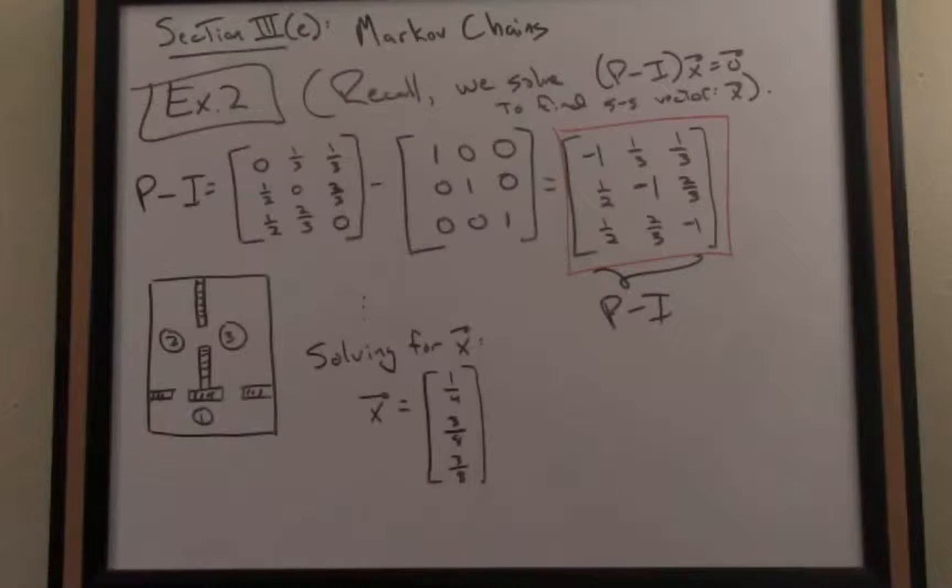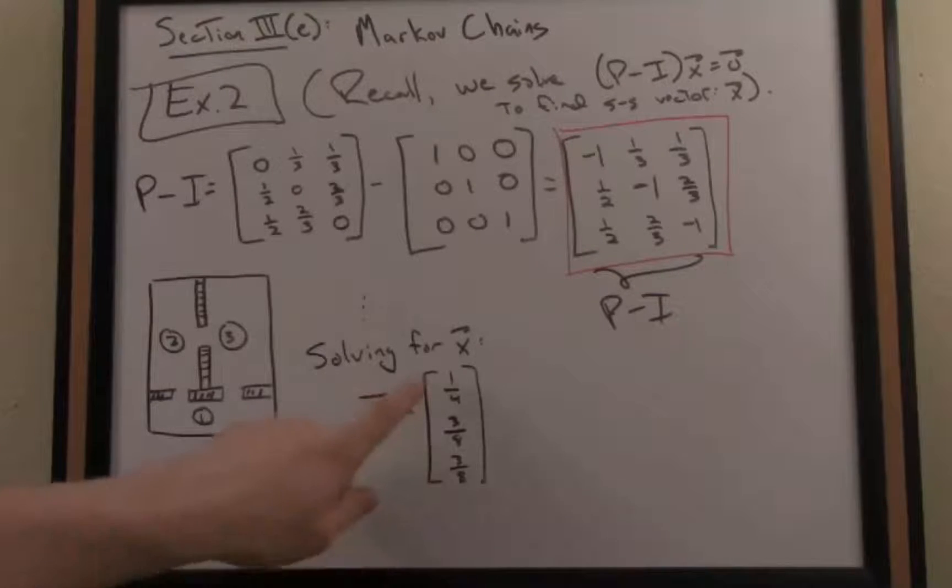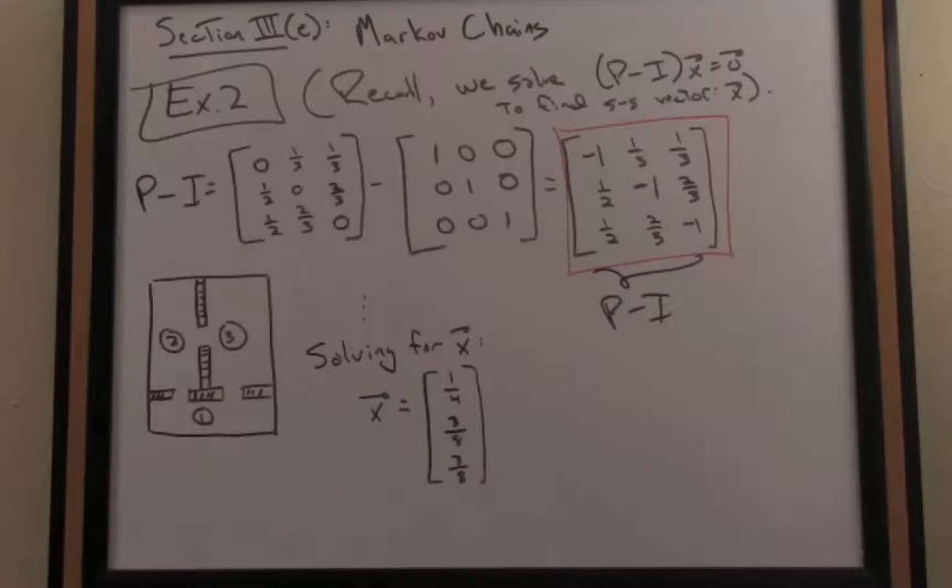When I do that calculation, when I solve for X, our steady state vector, we get the following result. X is equal to one-quarter, three-eighths, three-eighths. You can notice that if I add the components of that vector together, I get one, so it is in fact a probability vector, which is a nice thing to check.